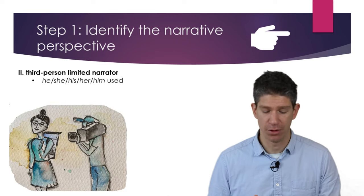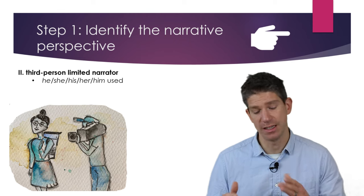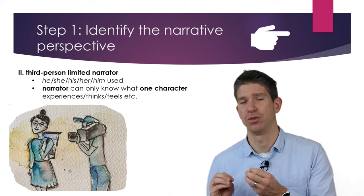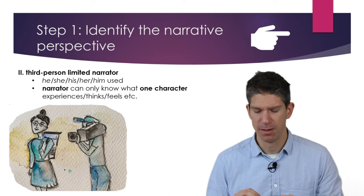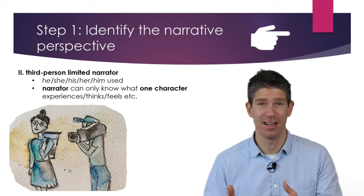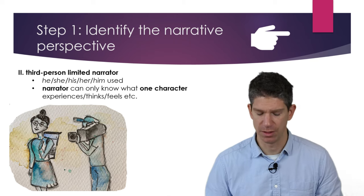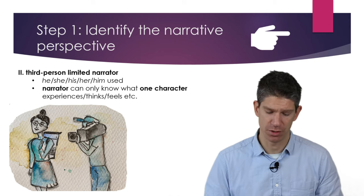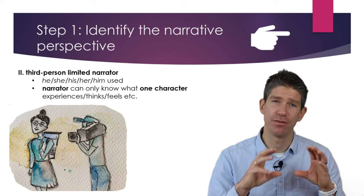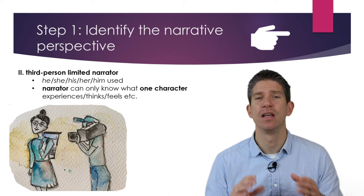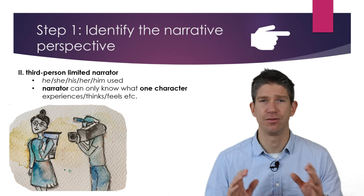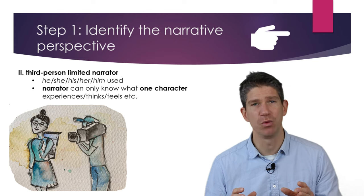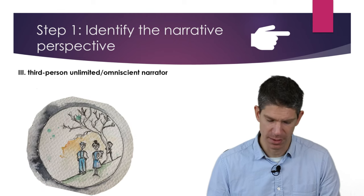The third person limited narrator uses third person singular pronouns — he, she, his, etc. Here we have a narrator who picks one character to tell the story, but this character does not appear as 'I' but as 'he' or 'she.' In a way it's very similar to the first person narrator, but there can be more distance. The camera analogy here is a camera held very closely and focused on one character — we still only know what this character sees, feels, and hears, but it can be slightly more of an outside view.